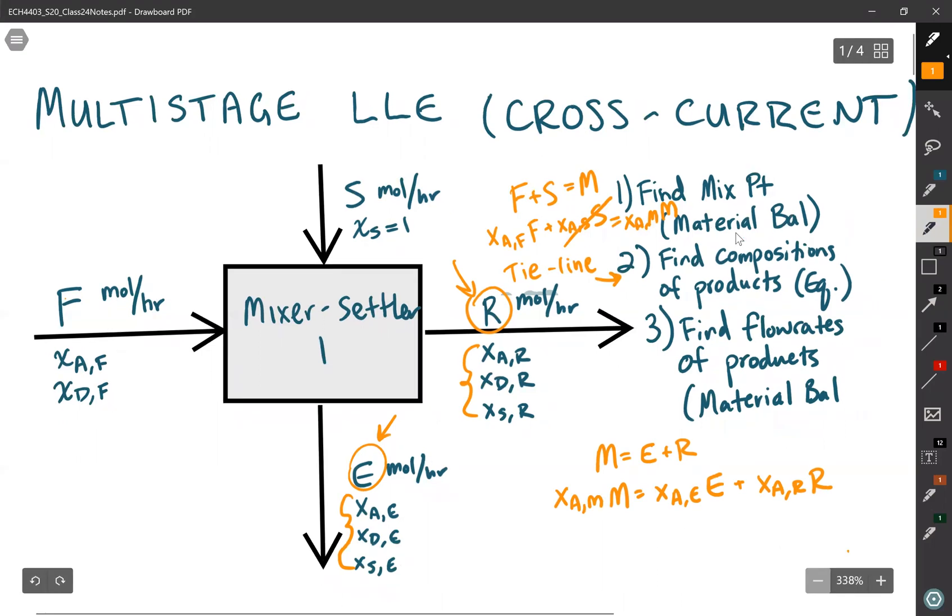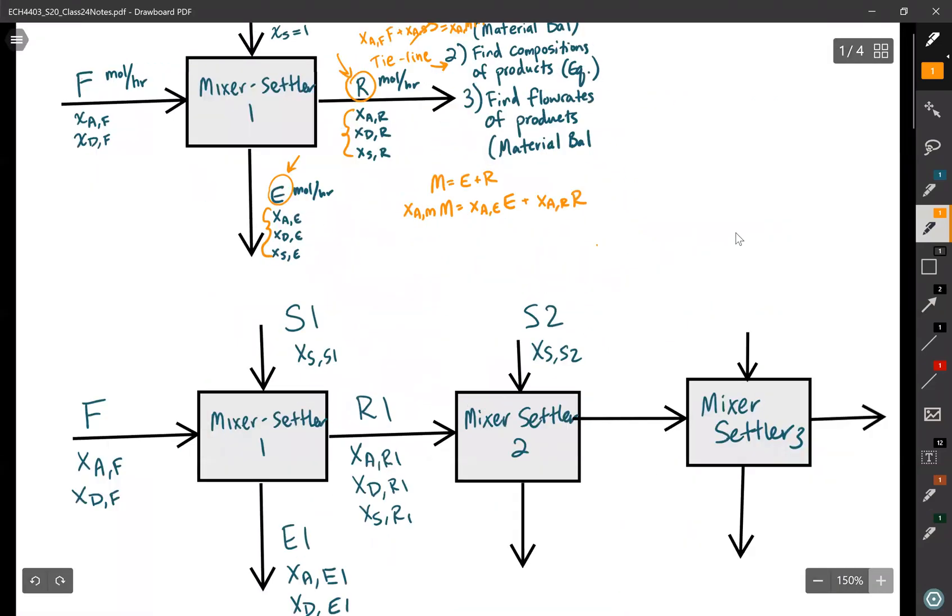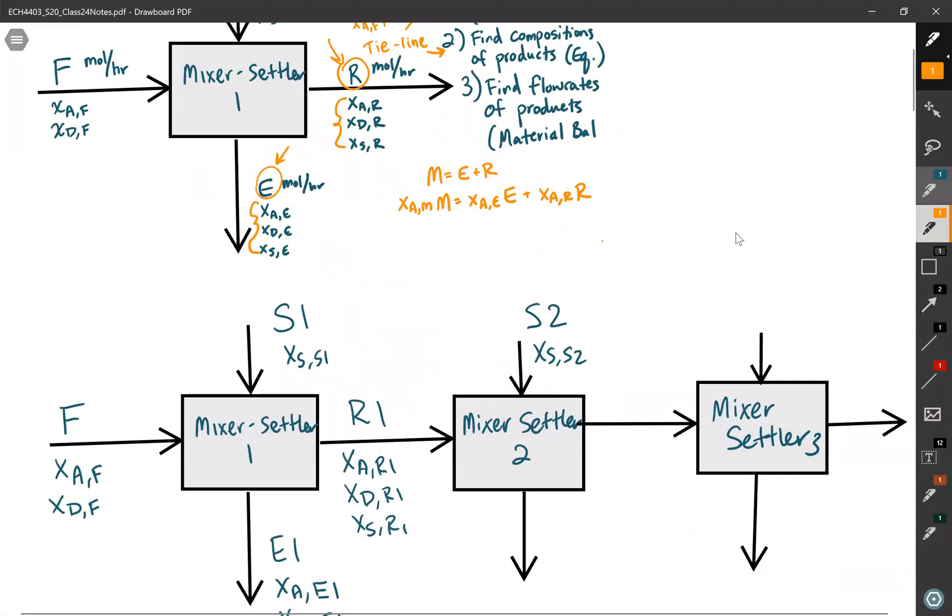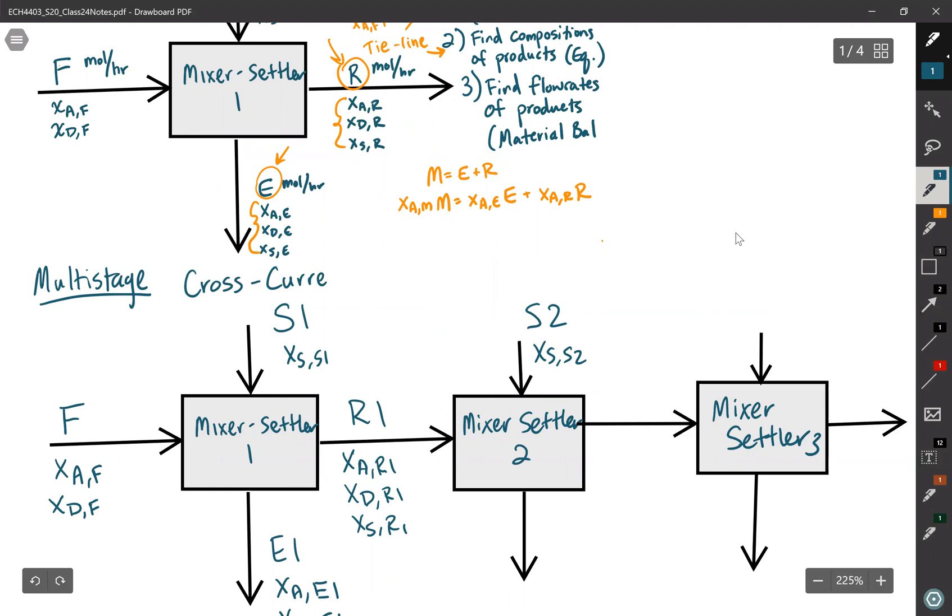Today we are going to extend that solving algorithm to a multi-stage liquid-liquid extraction process. Here's an example where there are three equilibrium stages, each time I'm feeding the raffinate from the stage before to the next stage. This, I'd like to also point out, is a cross-current configuration. We'll talk about a counter-current configuration a little bit later. But there are two ways that you can configure these liquid-liquid extraction processes to go.